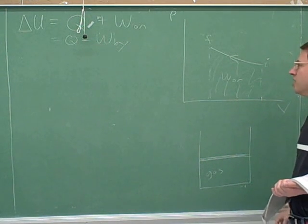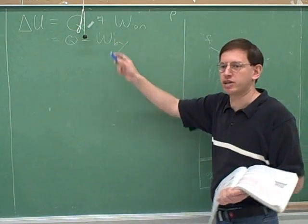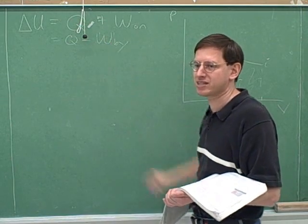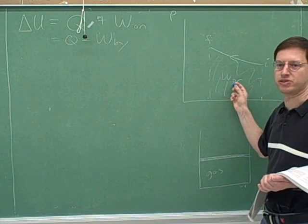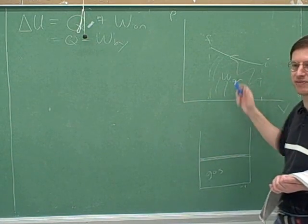So if they want to work with the work done by the gas, in fact, that's what your book would probably do, because your book uses this equation. They just stick with the work done by the gas. So if this area is 5 joules, they would say the work done by the gas is negative 5 joules. But I think it's really much clearer just to say that the work done on the gas is 5 joules.